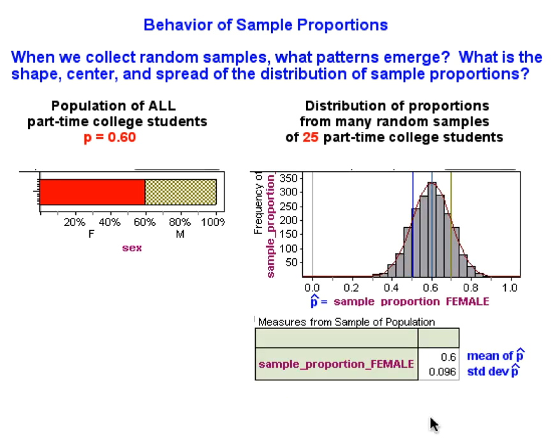Let's see what happened. I collected over 2,000 random samples. Each sample had 25 part-time college students in it. And for each sample, I calculated the proportion that were female and recorded that here.